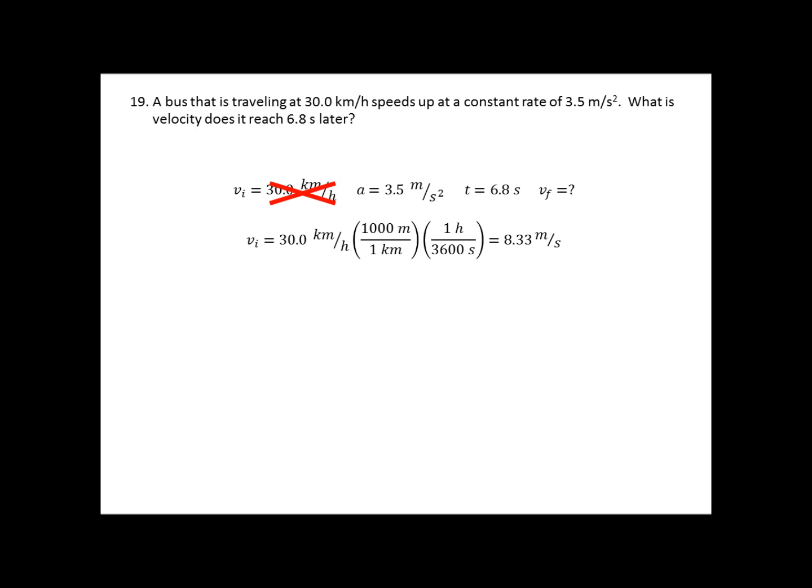Now, that's the number we're going to use, not the 30. So, our equation again, V final equals V initial plus AT. Plug in my V initial, plug in my acceleration, plug in my time. And we get a final velocity of 32.13 meters per second.